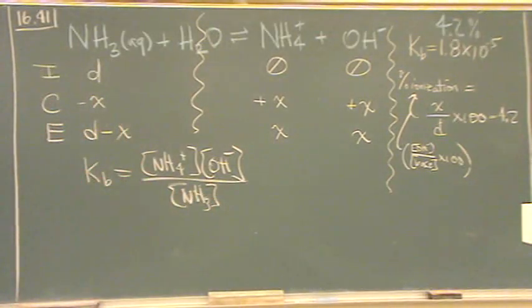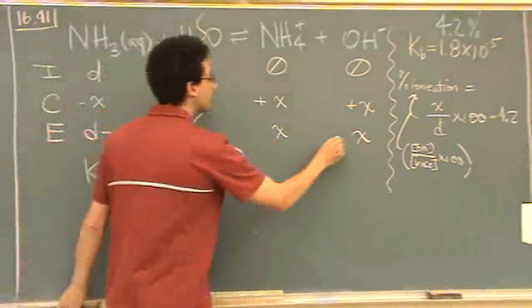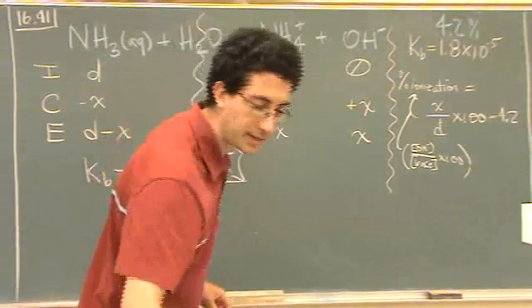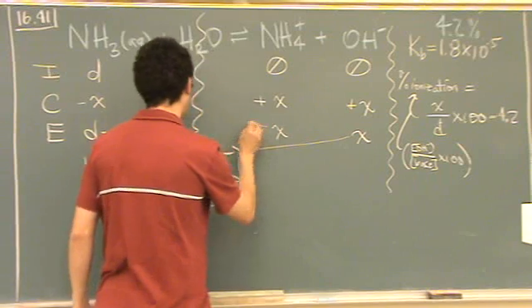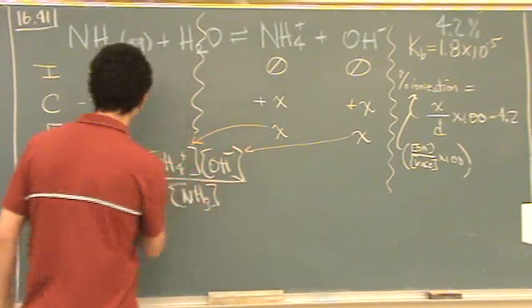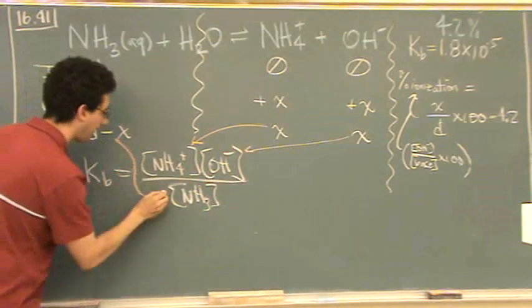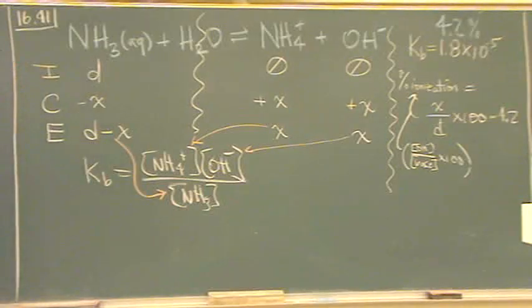And now I just plug in straight from the ICE table. We've got to do this in a slightly different color. There's that value, that value, that one. I'm going to plug in.